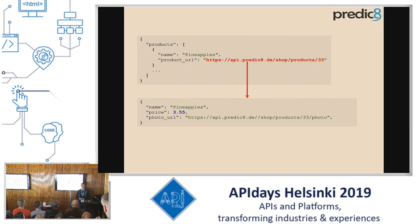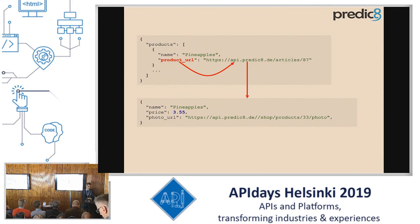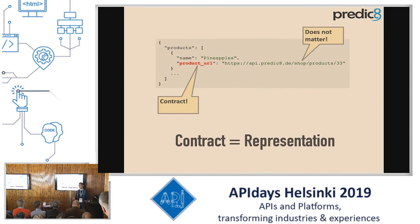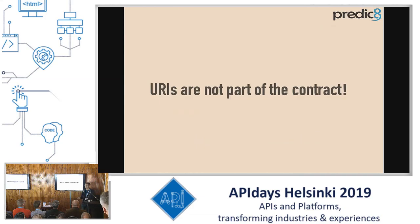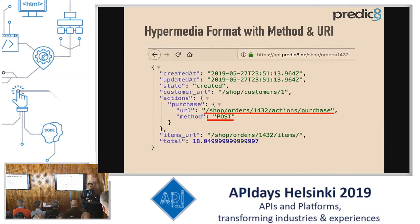It moves from one state to the next state by transitioning and following a link. But the important thing is not the link — the important thing is the format. So the link can be anything; it can even be something different and it's still working. The contract is the representation, not the link or the method. So the URIs are not part of the contract. In REST you should provide everything you need in the representations so you can interpret it and do the appropriate thing.